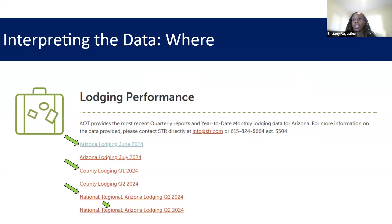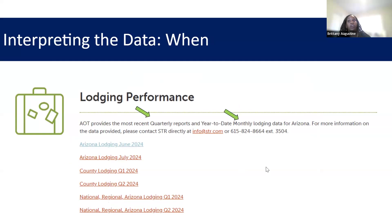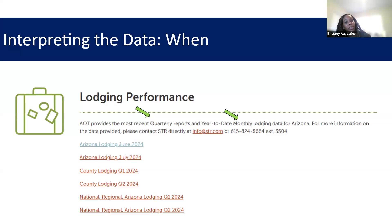Now we're going to get into where. Where is this data coming from? This data is available for the state of Arizona, for counties, and at the national and regional level. Unfortunately, we don't have data available at the city level — that would probably be better sourced from your local DMO. As for when, this report is updated monthly and quarterly. For the STR lodging reports specifically, we can only have a few months' worth of data on the website due to privacy and sharing restrictions. If you happen to miss it, feel free to email us and we'll send you the months that you missed.